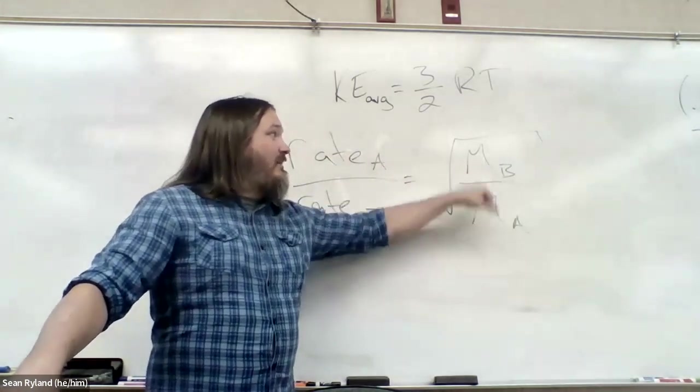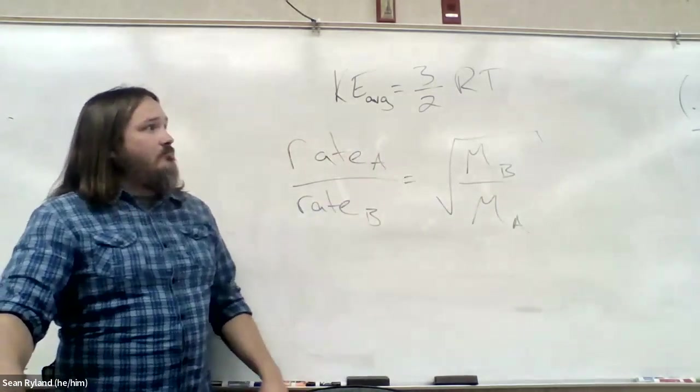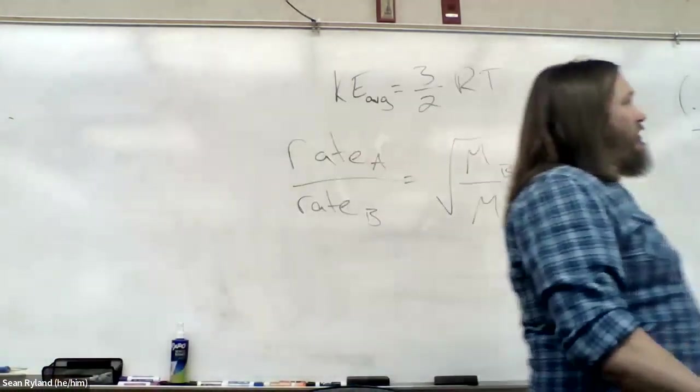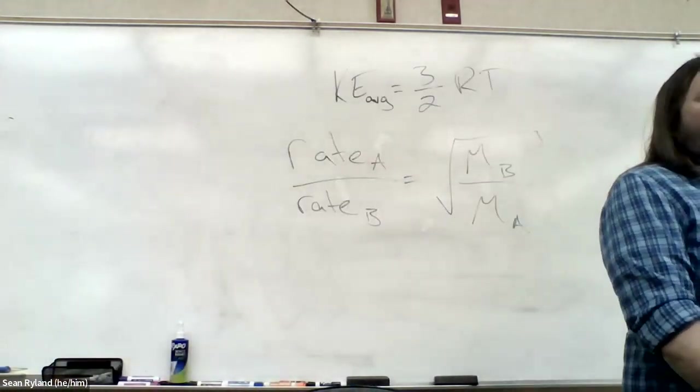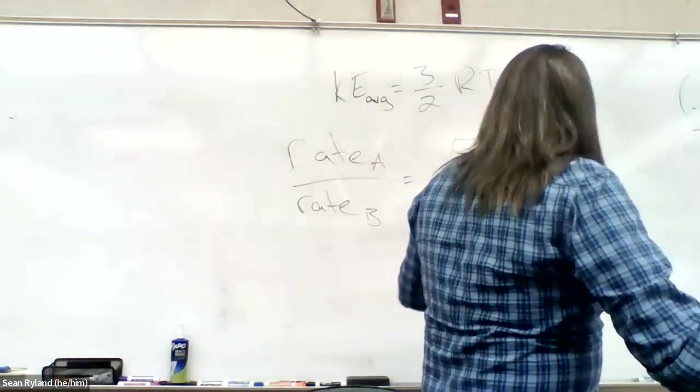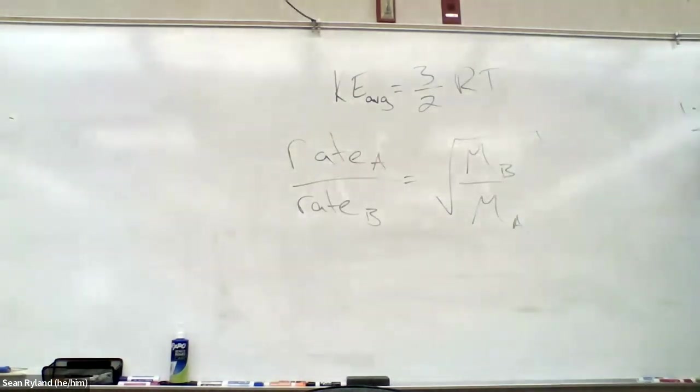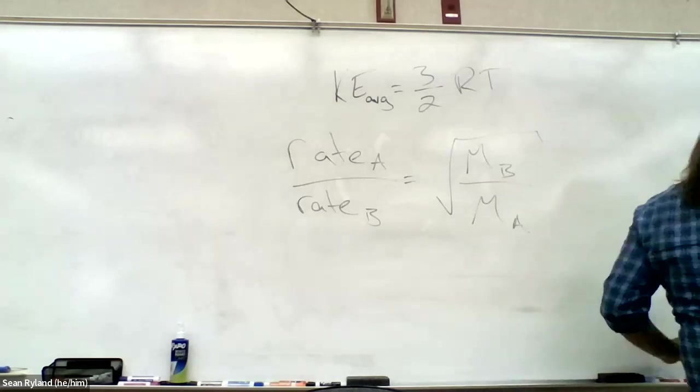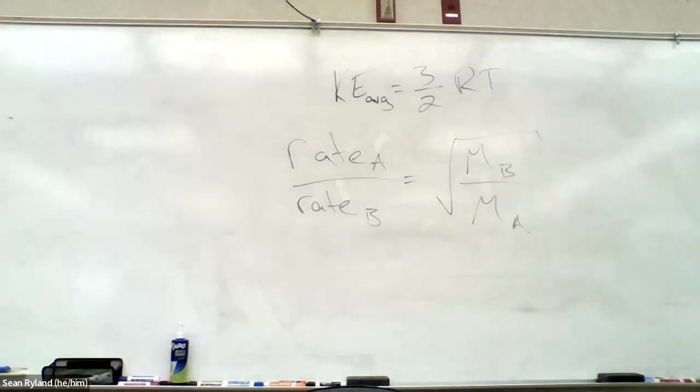B is on the bottom over here, it's on the top over there. And that's because the bigger something is, the slower it's moving. So the velocity is inversely proportional to the square root of the mass. So we wind up with that switch over.